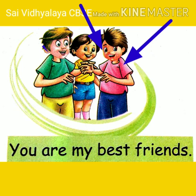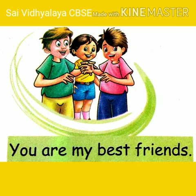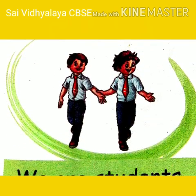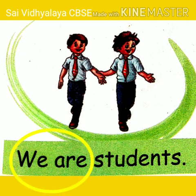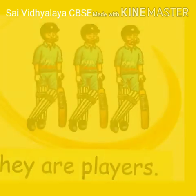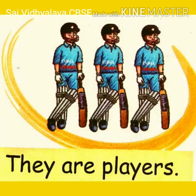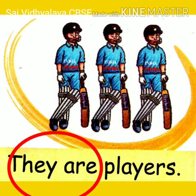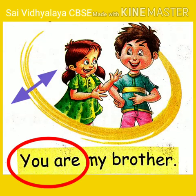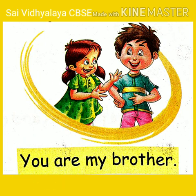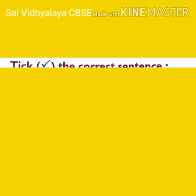More than one friend — you are my best friends. You can say: you are my friend, you are sleeping, you are dancing, you are eating. We are students — first person plural. They are players, they are cricket players. The girl says: you are my brother. So are is used with you, we, and they.